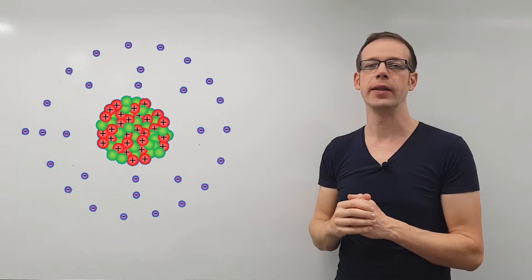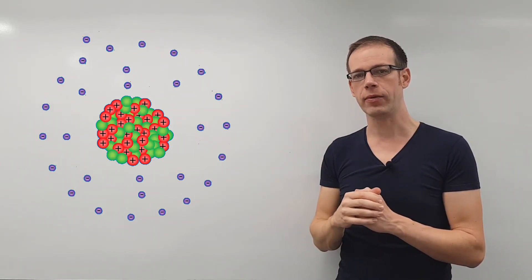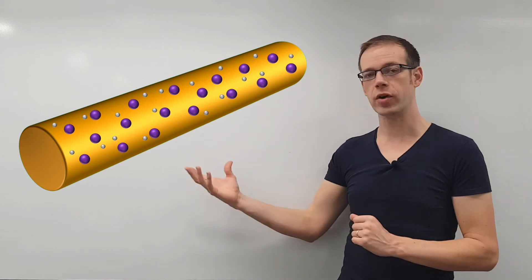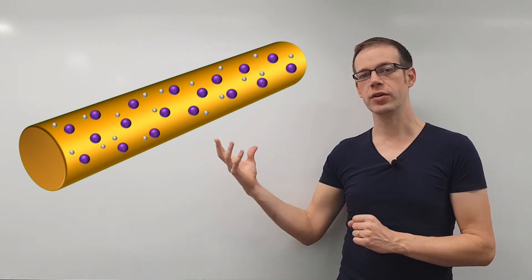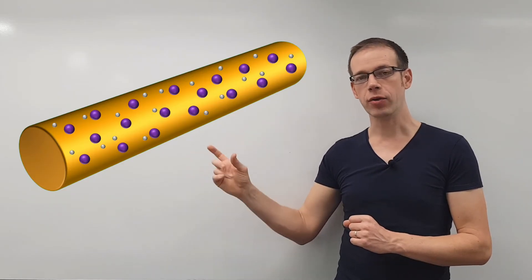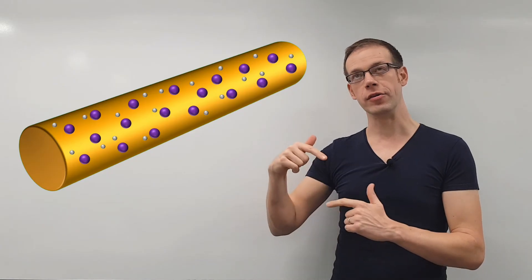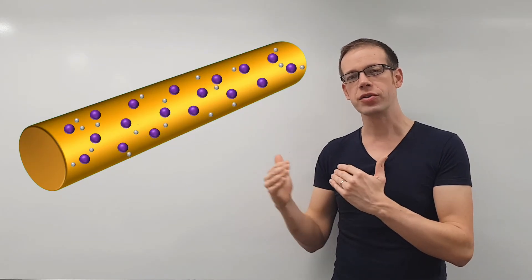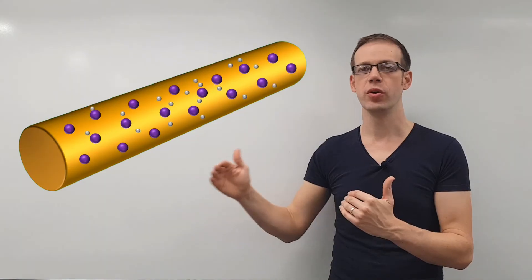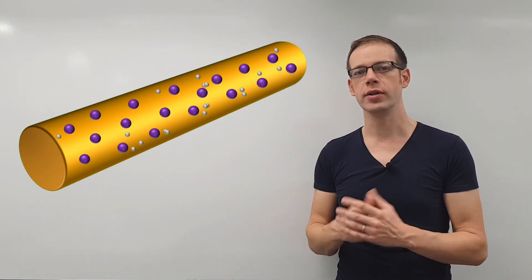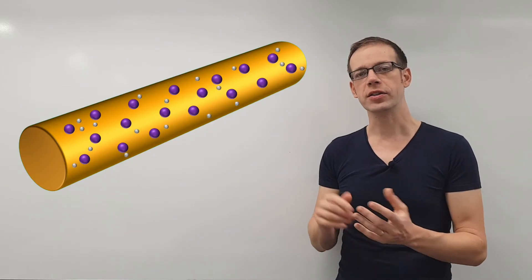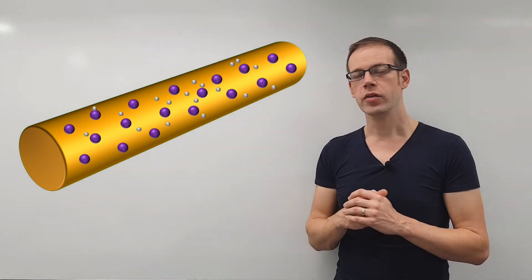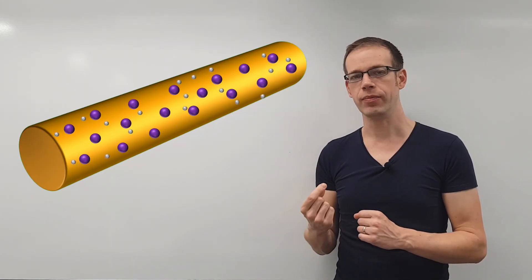We refer to that gap left behind by the electron as a hole, and we'll need to understand that in a little more depth in a future video. If we could look inside a block of copper — if we could zoom in close enough to see the atoms and the electrons on the outer shell — we'd see that those individual electrons are in constant motion, always drifting from one atom to another. That effect is referred to as the electron sea, because there are a number of free electrons just drifting about at random inside that piece of copper.